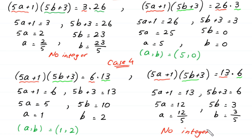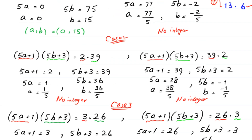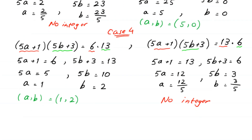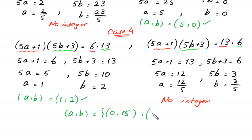So we get three pairs of solutions. The first is (0,15), the second is (5,0), and the third is (1,2). These are the final answers for this equation.